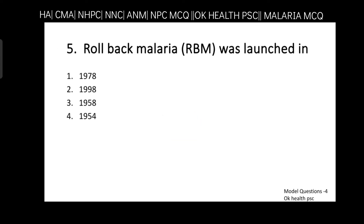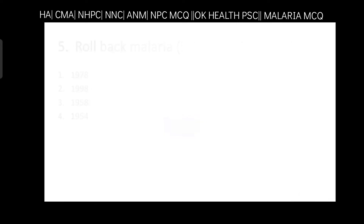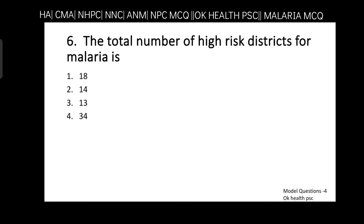Question number five: Rollback Malaria (RBM) was launched in which year? 1978, 1998, 1958, or 1954? Answer is option two — 1998. Rollback Malaria was launched in 1998. Question number six: the total number of high-risk districts for malaria is 18, 14, 13, or 34?